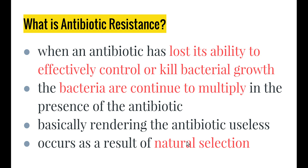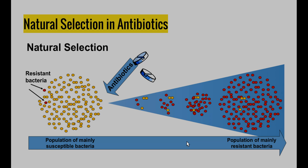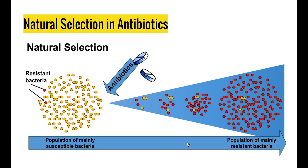Now for a brief look at antibiotic resistance. Antibiotic resistance is when an antibiotic has lost the ability to effectively control or kill bacterial growth — the bacteria continue to multiply even though the antibiotic is present, rendering it useless. This can occur as a result of natural selection. We start with a massive population of bacteria, and within populations numbering in the thousands to millions, there are bound to be a few individuals that are slightly different as a result of a mutation, and these bacteria are actually resistant to the antibiotics.